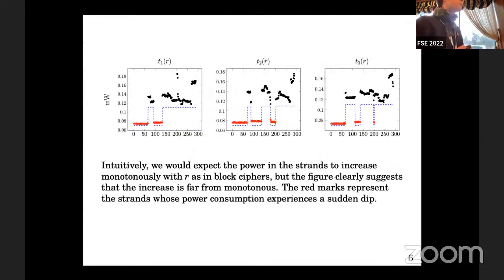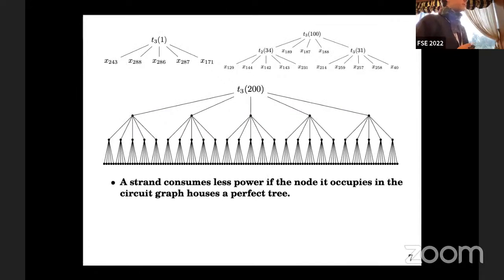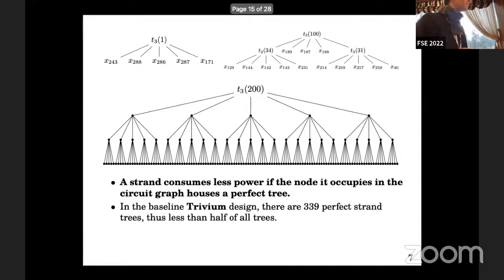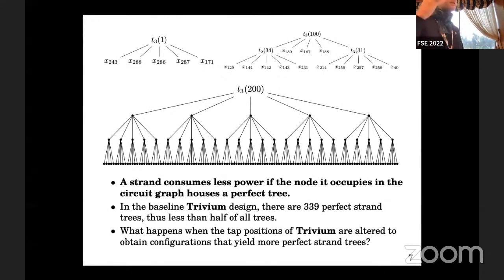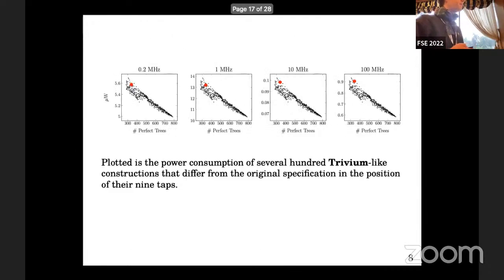When you do this, you get something surprising. Intuitively we'd expect power to rise with the unrolling degree because the underlying circuits get more and more complicated. But this is not what happens — even for high r, there are sudden dips in power consumption. Why? It happens when the underlying tree of the strand is imperfect. A strand consumes less power if the node it occupies in the circuit graph houses a perfect tree. In baseline Trivium, there are 339 perfect strand trees — roughly half of all trees. This naturally raises the question: what if we alter the tap positions of Trivium to yield more perfect trees?